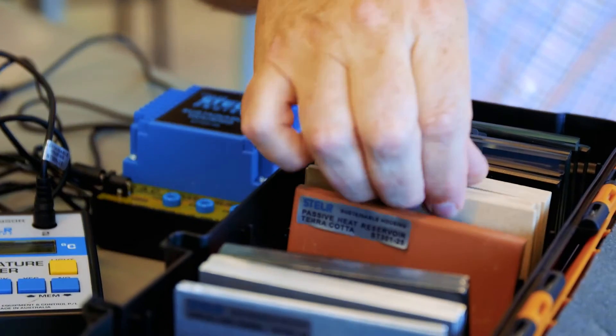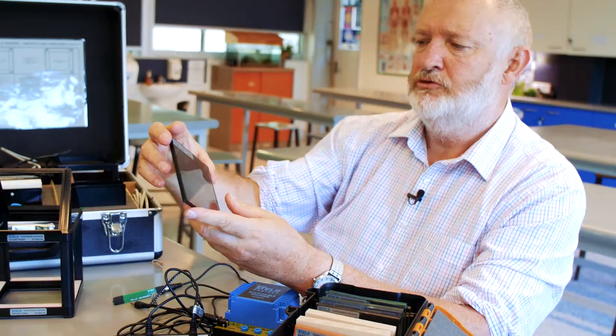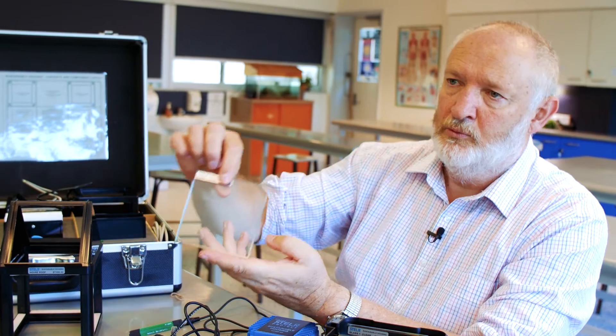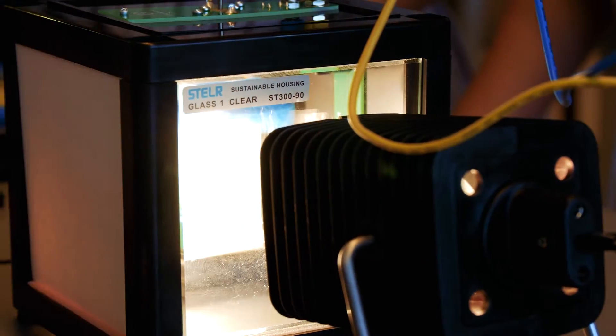Also in the teacher kit there are eight wooden panels, tinted grey, low E glass and regular glass. There's a heap of experiments they can do about what type of window they'd want.